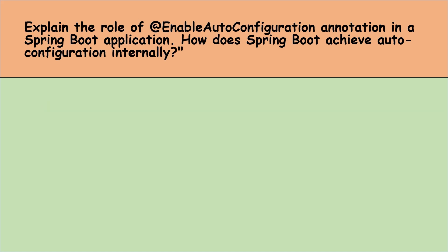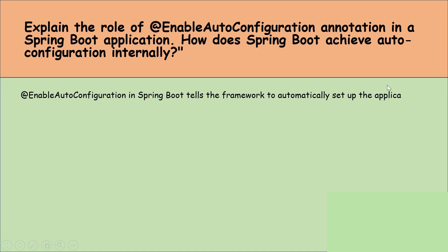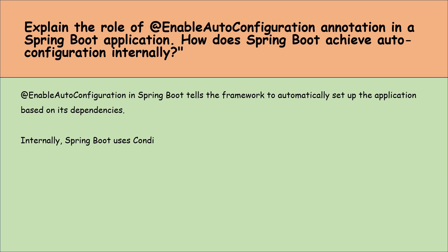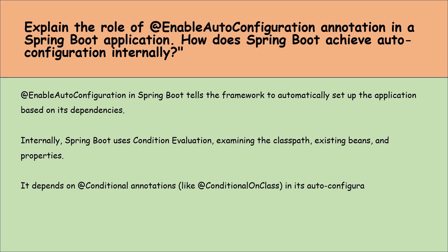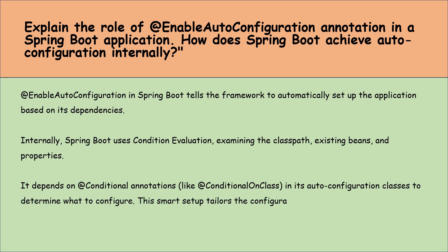Explain the role of the @EnableAutoConfiguration annotation in a Spring Boot application and how Spring Boot achieves auto-configuration internally. The @EnableAutoConfiguration annotation tells the framework to automatically set up the application based on its dependencies. Internally, Spring Boot uses conditional evaluation that examines the classpath, existing beans, and properties. It relies on conditional annotations in its auto-configuration classes to determine what to configure. This smart setup tailors the configuration to our needs, simplifying and speeding up the development process.